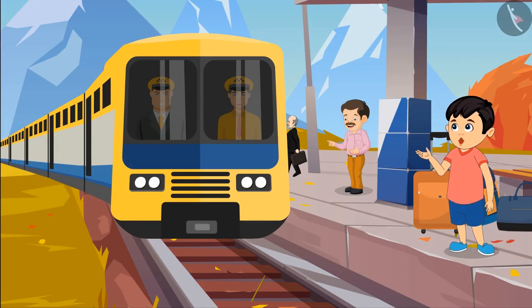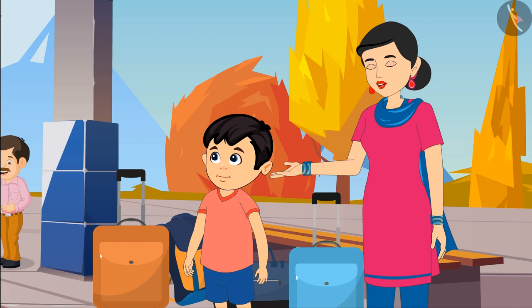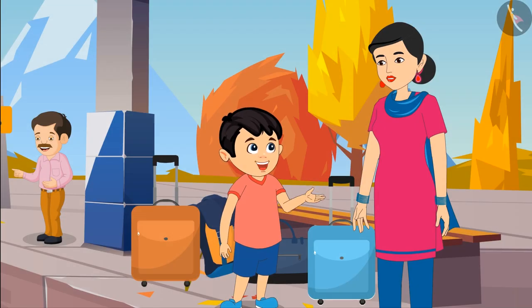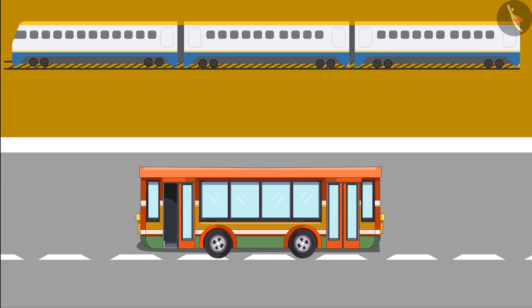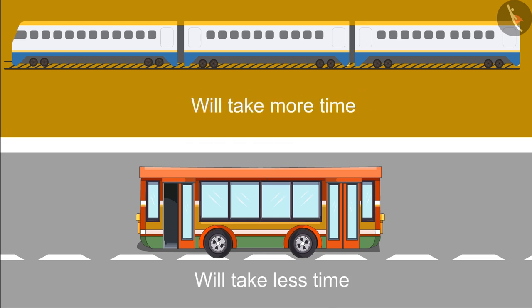Chotu says, "Mom, this train is so long." His mother replies, "Yes, Chotu. There are lots of coaches in the train." Chotu then says, "Mother, this train is longer than the bus. It means that it will take us longer to reach my grandparents' house."